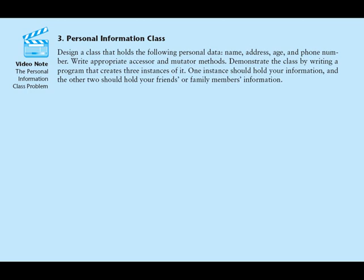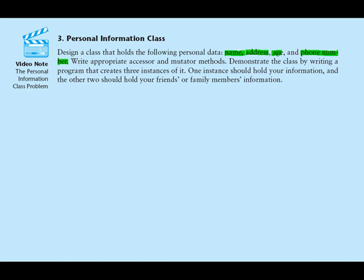The problem tells us to design a class that holds the following personal data: a name, an address, an age, and a phone number. The idea here is that we're going to design this class, and then we can create objects from the class, and each object can hold a person's personal information — representing a person in the program.